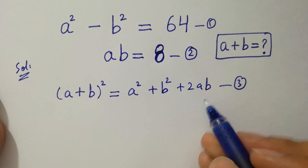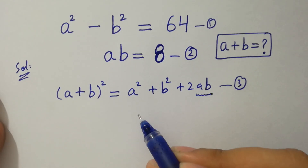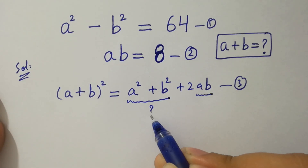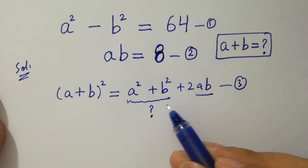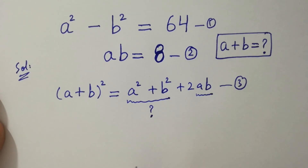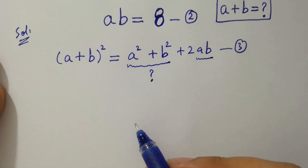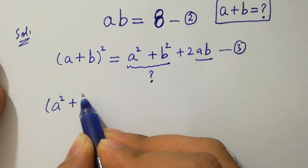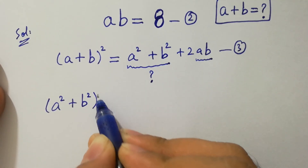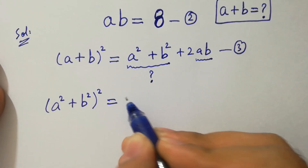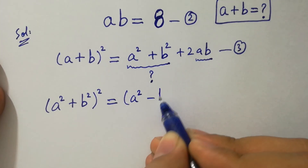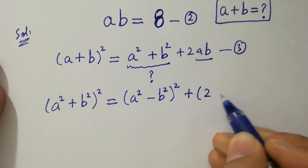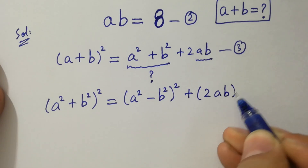Here, we know the value of ab but we don't know the value of a squared plus b squared. To find the value of a squared plus b squared, we can use another formula: a squared plus b squared, whole squared, equals a squared minus b squared, whole squared, plus 2ab whole squared.